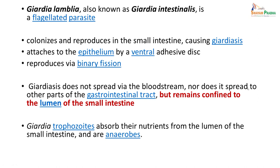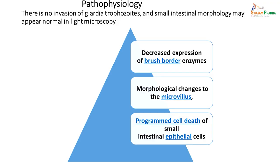Giardia lamblia, also known as Giardia intestinalis, is a flagellated protozoan. It colonizes and reproduces in the small intestine, causing Giardiasis. It attaches to the epithelium by the ventral adhesive disc and reproduces by binary fission. Giardia does not spread via the bloodstream, nor does it spread to other parts of the GI tract — it remains confined to the lumen of the small intestine. The trophozoites absorb nutrients from the lumen and are anaerobes, not requiring oxygen for survival. As for pathophysiology, there is no invasion by Giardia trophozoites and small intestine morphology appears normal under light microscopy. The main mechanisms of damage include decreased expression of brush border enzymes, morphological changes to microvilli, and programmed cell death.